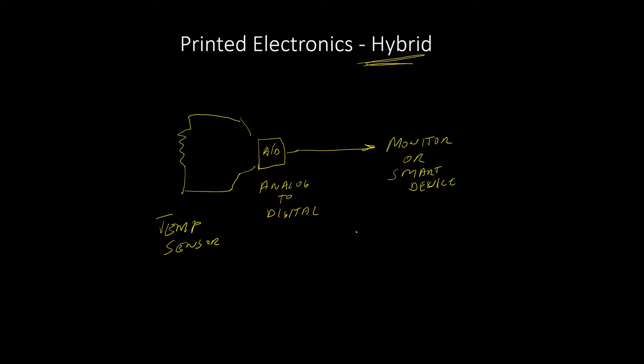So the current state of printed electronics is such that you can print some integrated circuits and things like this, but it's really not efficient and it's not cost effective. So what they do is you print the whole circuit typically on a plastic thing. Here's my circuit. And then they actually attach a very small flexible IC chip right onto the flexible circuit. And it also flexes so that you can get out the signal that you want.